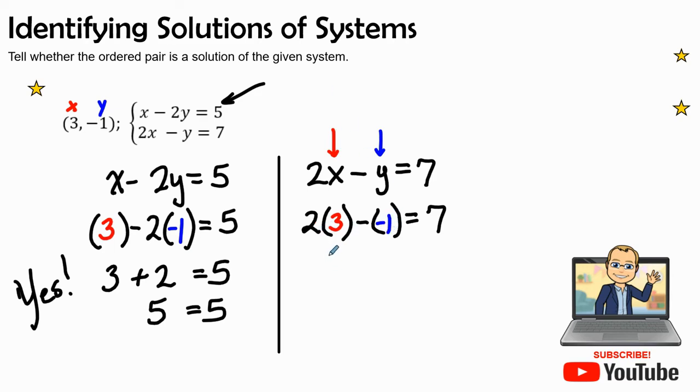Therefore, 2 times 3 is 6. Negative times a negative is a positive. Yes, it looks like it is. And absolutely, 7 is equal to 7. So the answer is yes.